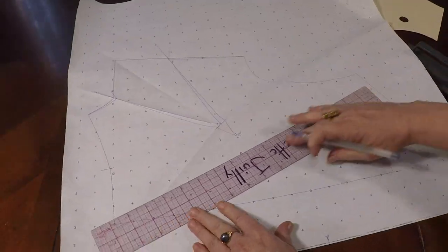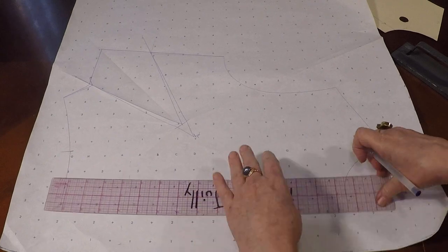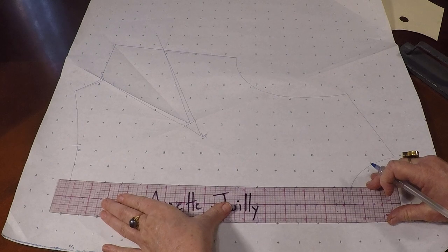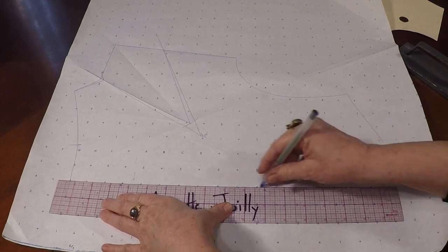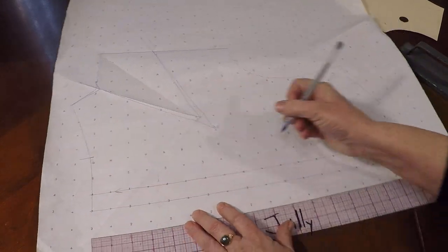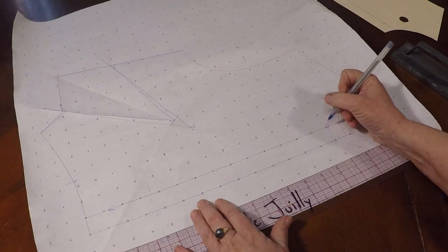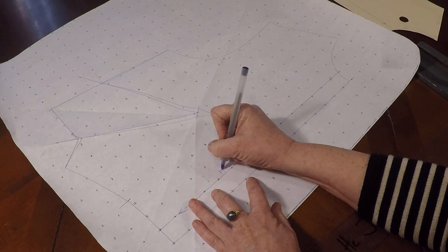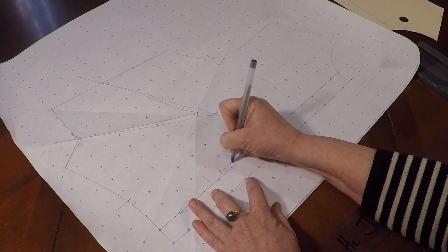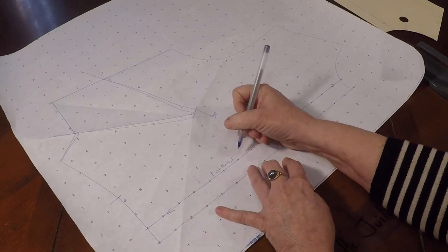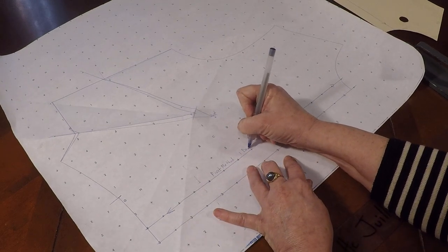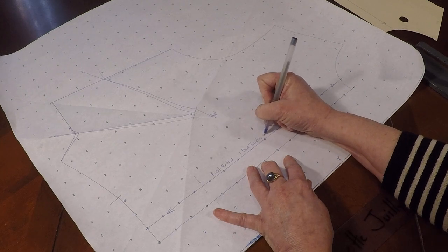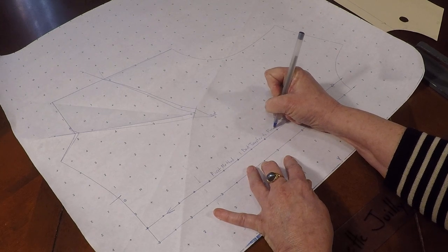But this is our one dart pivot transfer, and we're going to add a grain line now. Parallel with the one that you already made, arrows both directions. And this is our pivot method.